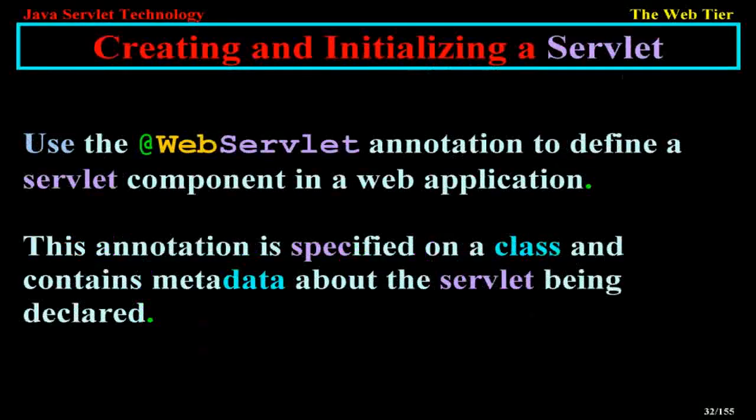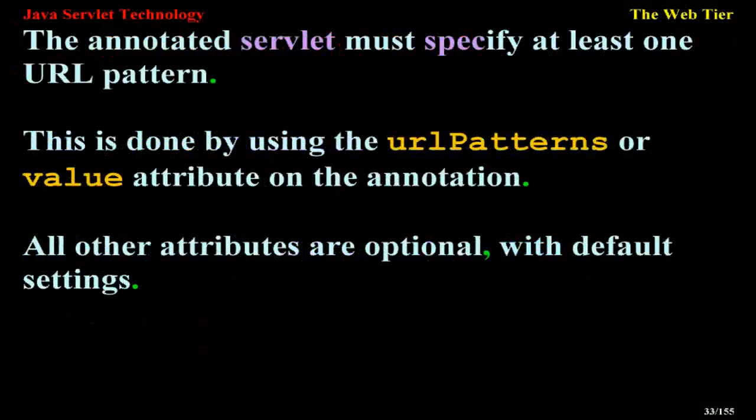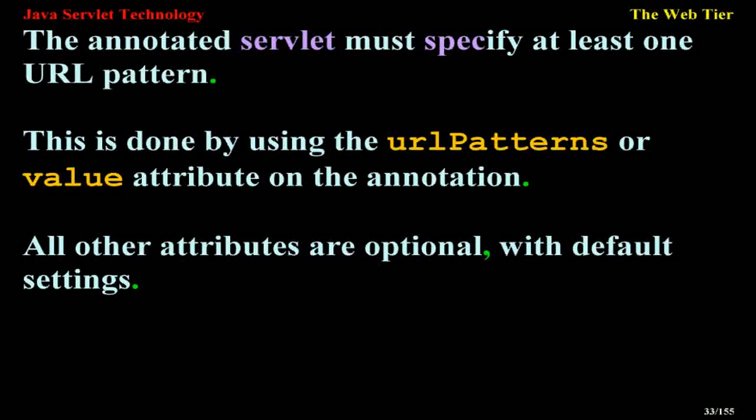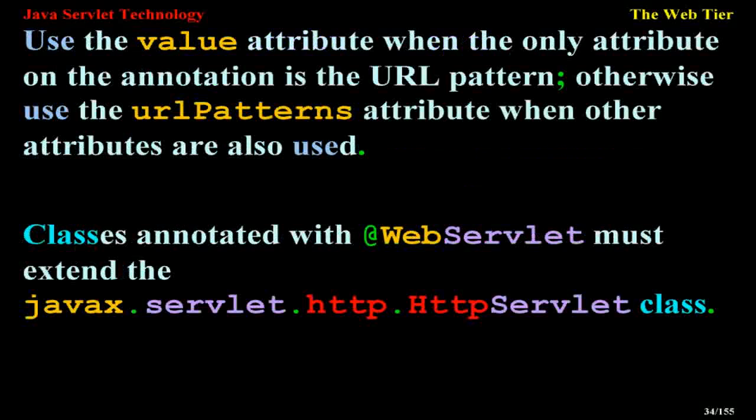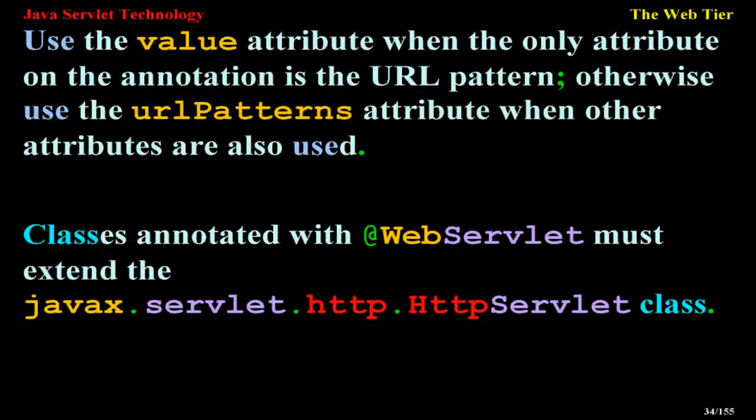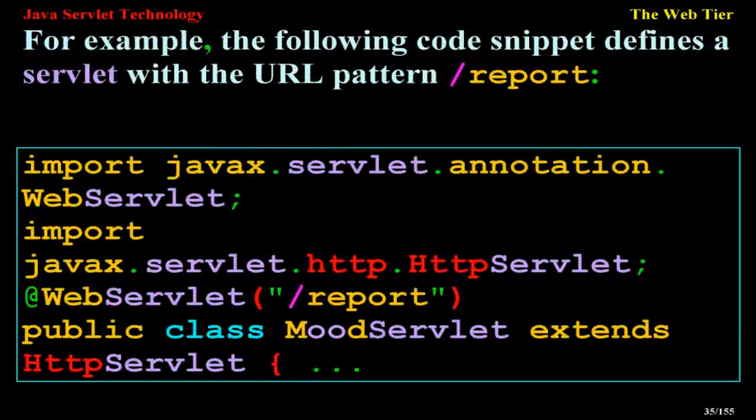Creating and initializing a servlet. Use the @WebServlet annotation to define a servlet component in a web application. This annotation is specified on a class and contains metadata about the servlet being declared. The annotated servlet must specify at least one URL pattern. This is done by using the urlPatterns or value attribute on the annotation. All other attributes are optional, with default settings. Use the value attribute when the only attribute on the annotation is the URL pattern. Otherwise, use the urlPatterns attribute when other attributes are also used.